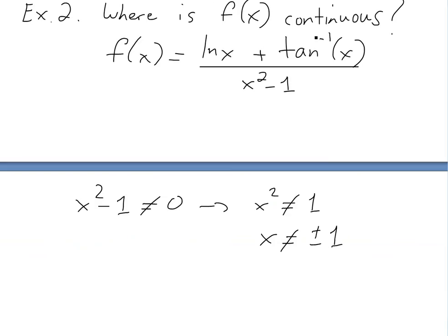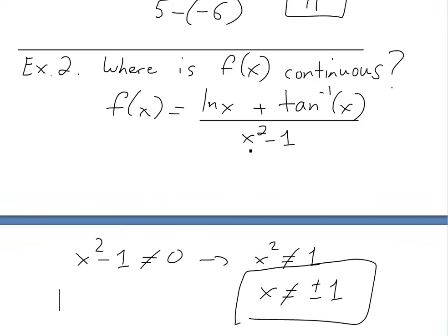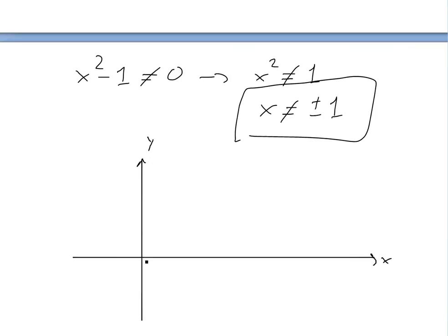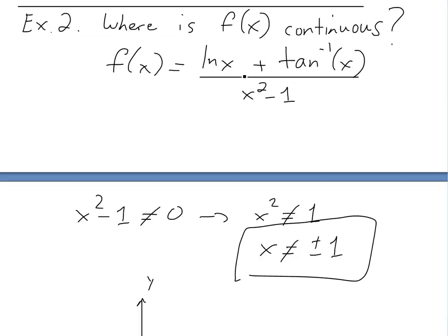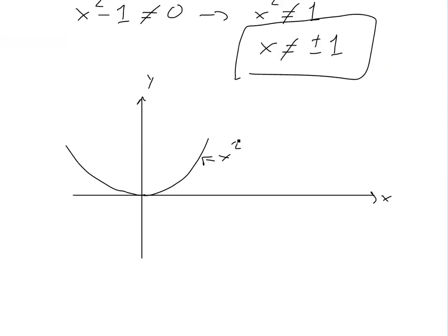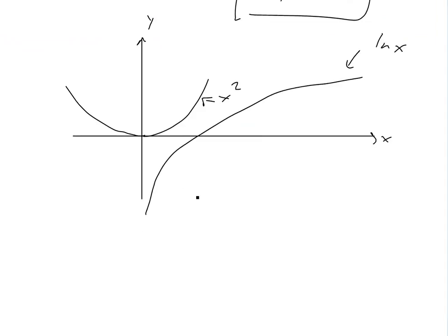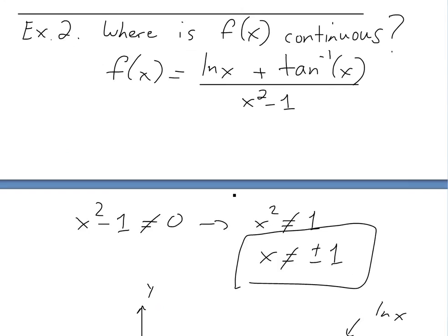So we know it's not defined at x = ±1. Looking at each component separately: x squared minus 1 is continuous everywhere, since x squared is continuous — it's a smooth parabola going on forever. Now for ln x, it looks like a curve that's continuous on its domain, which is x greater than 0. So it's only defined and continuous for x > 0.